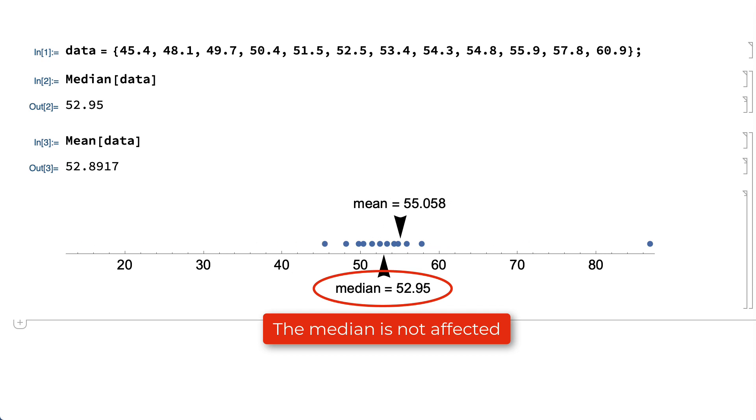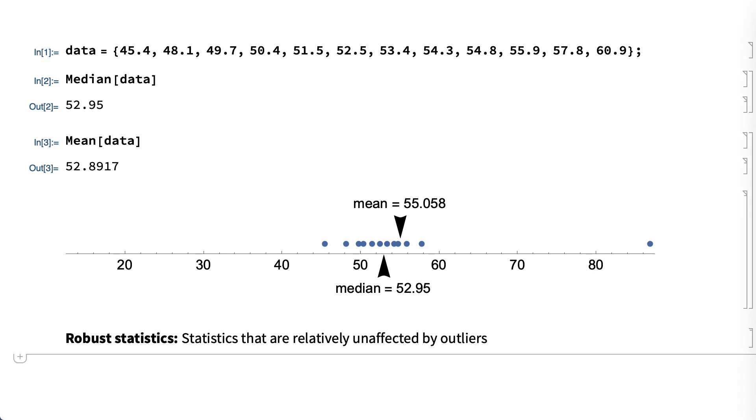Numbers like the median that are relatively insensitive to outliers are called robust statistics. The word robust here is a technical term and is not intended to suggest that robust statistics are any better than other statistics.